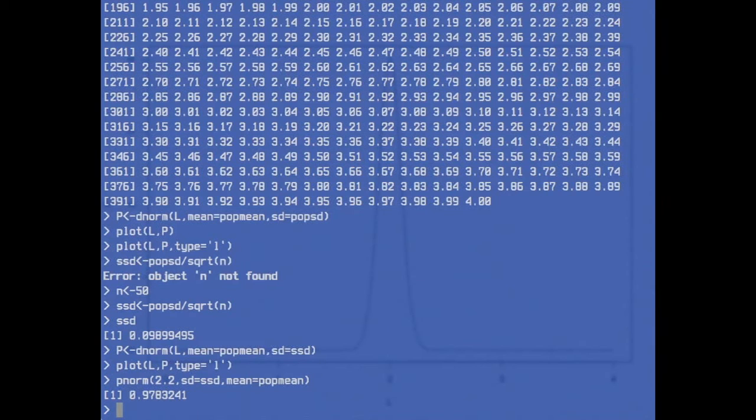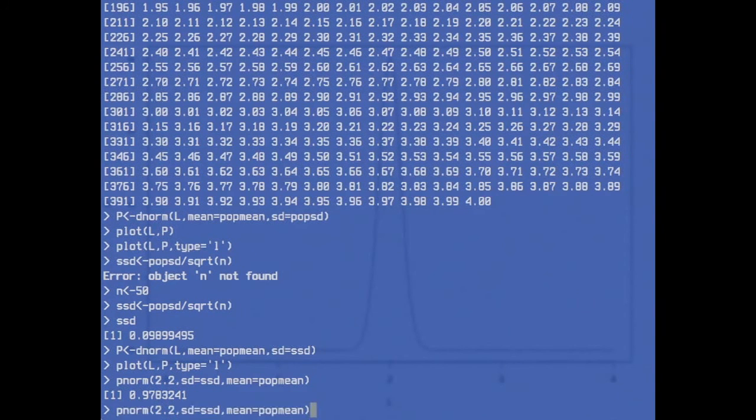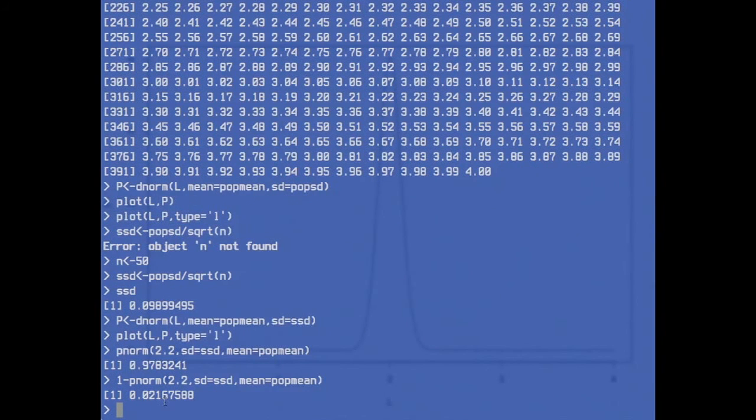So that is the area—it's a 97.8 percent chance to be to the left of 2.2 liters. To run out of water, it's one minus that, so the probability is 0.0217, or you can round it to 2.2 percent.